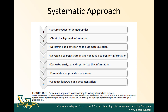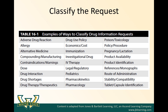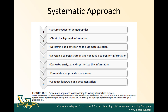Then you're going to determine and categorize the ultimate question by classifying the request. This is important because it helps you focus your search to specific resources. You try to identify some themes of the question, and there are different ways you might classify a drug information request. Next, you develop a search strategy and conduct a search for information — knowing where to begin and how best to search the literature to get the most accurate and up-to-date information. Once you have this information, you need to know how to evaluate, analyze, and synthesize it, identifying high-quality literature and knowing what makes it high-quality.